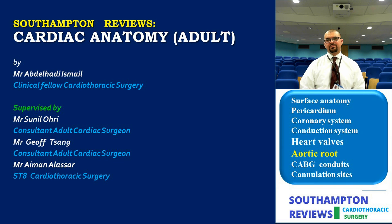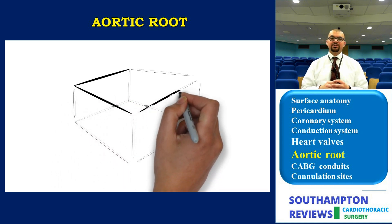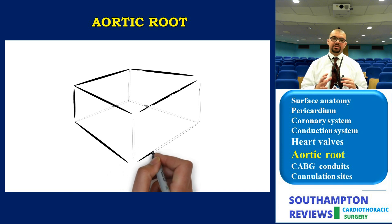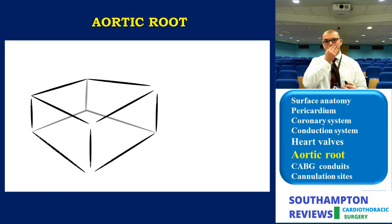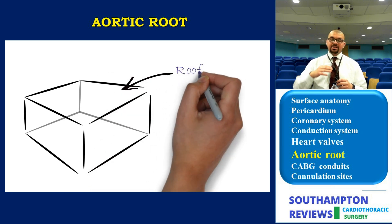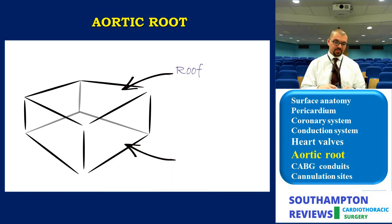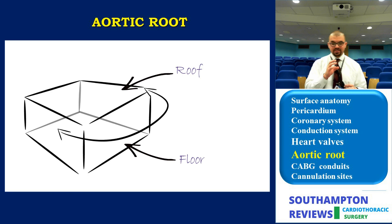Welcome back to the next section of this chapter. We'll be discussing the aortic root. The system we use to describe the aortic root is to consider it as a box with a roof, floor, walls, and contents. The aortic root has the sinotubular junction as a roof, the aortic sinuses as the walls, the aortic annulus as the floor, and the valve leaflets and their attachments as the contents.